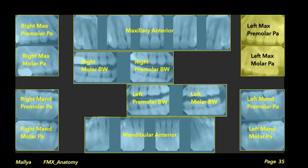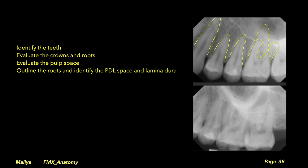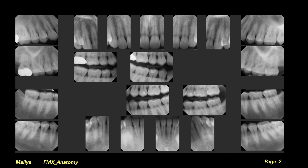We then move on to the left maxillary posterior region and go through the same sequence as the right side: identify the teeth, evaluate the crowns and roots, evaluate the pulp space, outline the roots, and identify the periodontal ligament and lamina dura. Also identify anatomic structures including the maxillary sinus, the floor of the maxillary sinus, and the zygomatic process of the maxilla. With that we would have completed the analysis of the dentomaxillofacial region of the maxilla extending from the tuberosity of one side to the tuberosity of the other side, using a systematic approach to evaluate the teeth, the pulp, the surrounding periapical bone, and the adjacent anatomic structures.